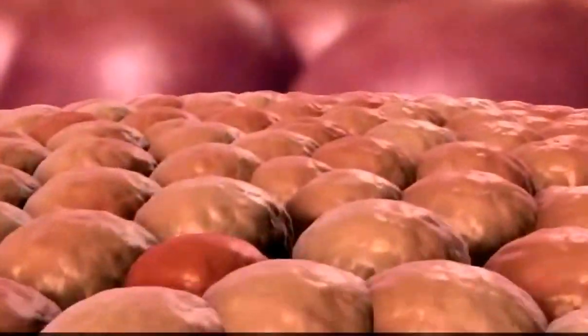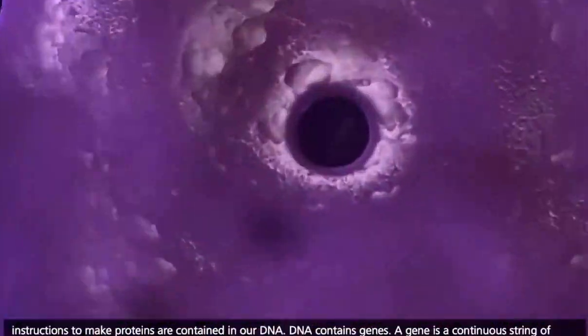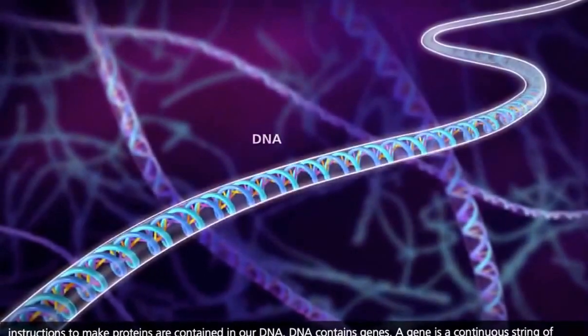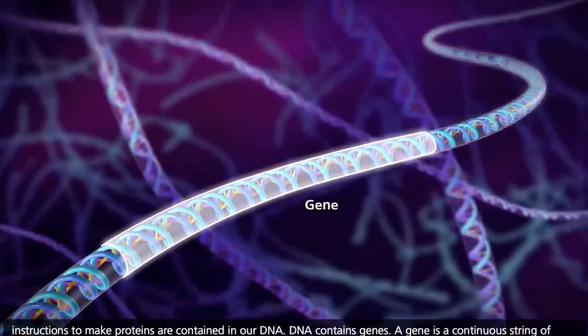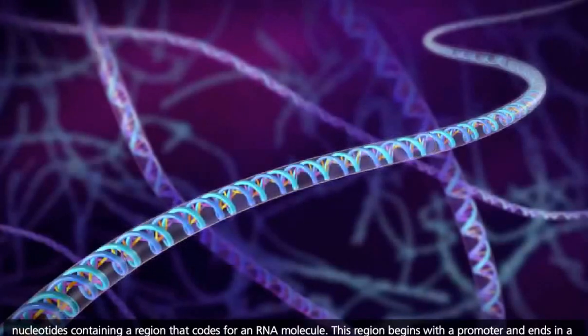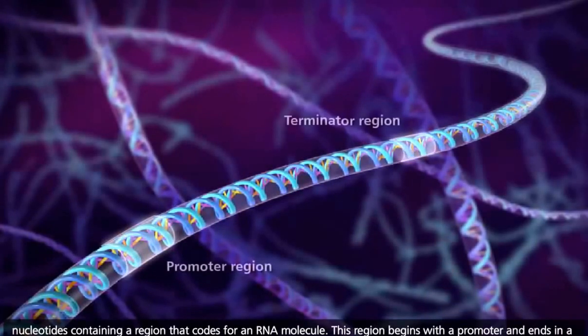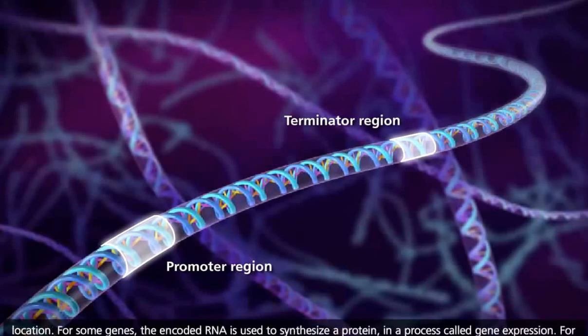And where are the instructions to manufacture these and all the different types of proteins we need to stay alive? The instructions to make proteins are contained in our DNA. DNA contains genes. A gene is a continuous string of nucleotides containing a region that codes for an RNA molecule. This region begins with a promoter and ends in a terminator. Genes also contain regulatory sequences that can be found near the promoter or at a more distant location.